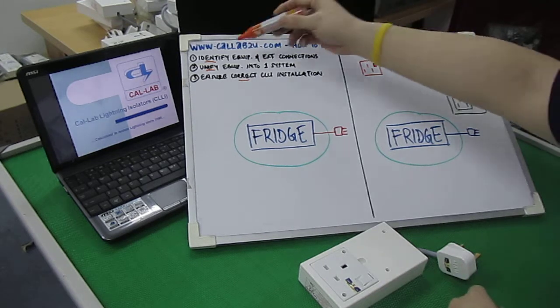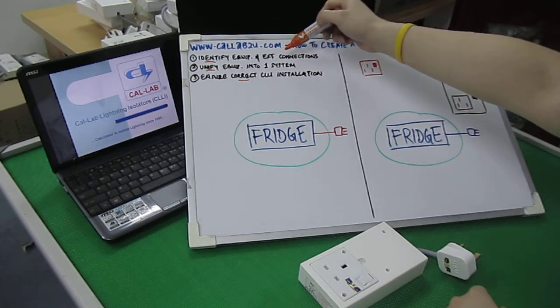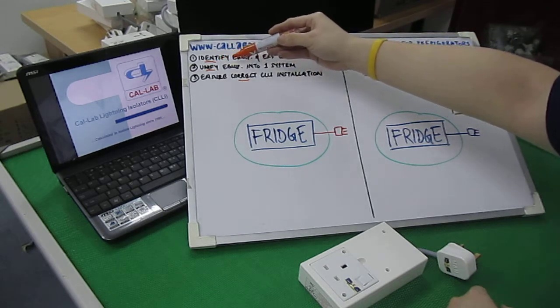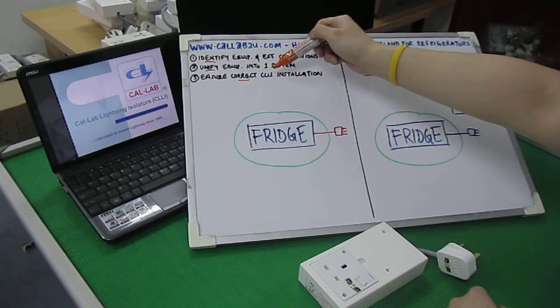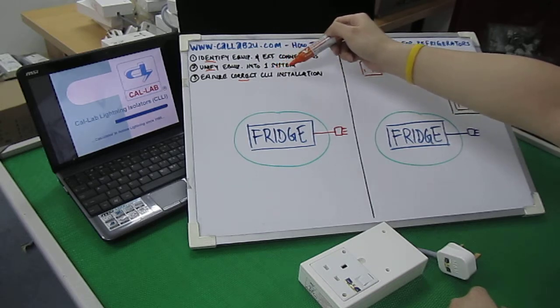Again, the first step is to identify the equipment you want to protect as well as the external connections. The second step is to unify the equipment into a single system, and the first step is to ensure correct CLLI or CalLab Lightning Isolator installation.